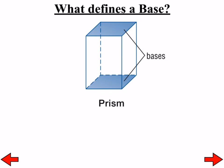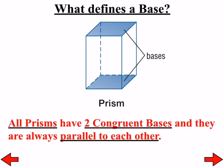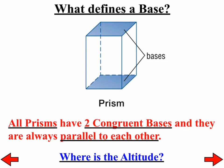What defines a base? Bases are always going to be, in terms of a prism or cylinder, parallel to each other. All prisms have two congruent bases, and they are always parallel to each other. Some people like to refer to them as top and bottom—that's okay, but sometimes shapes are on their side and it's harder to tell what the bases are. The altitude is how tall that shape is.